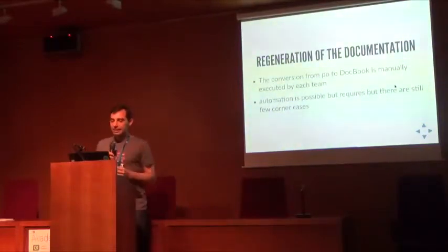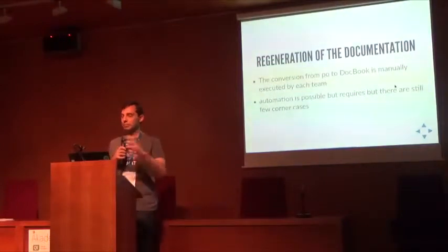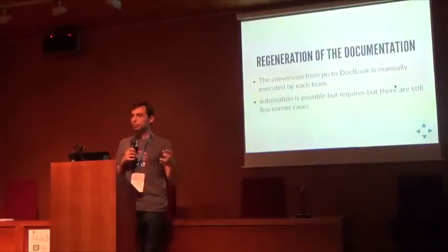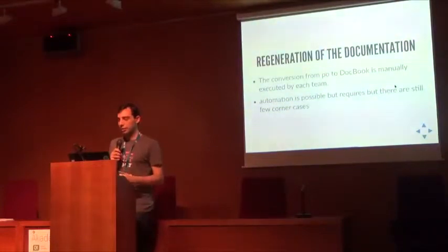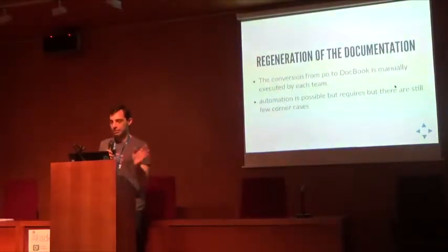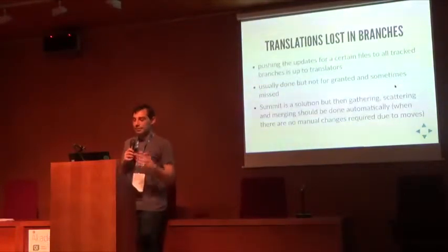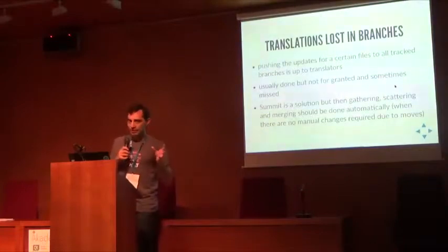Another thing that's a bit painful: when a team translates documentation, scripting does the magic converting .book to PO files, but then taking the PO files with translations and regenerating the .book is something each team needs to do. The documentation regeneration is possible, but there are a few corner cases. Sometimes if templates are not totally updated, some English text slips through — something that needs to be redone. That's a good side task because it's not part of the bigger changes. Also connected to Summit: translations are lost in branches because translators sometimes only translate in trunk or stable and don't propagate to other branches. Most teams are good at this, but Summit would be the solution.